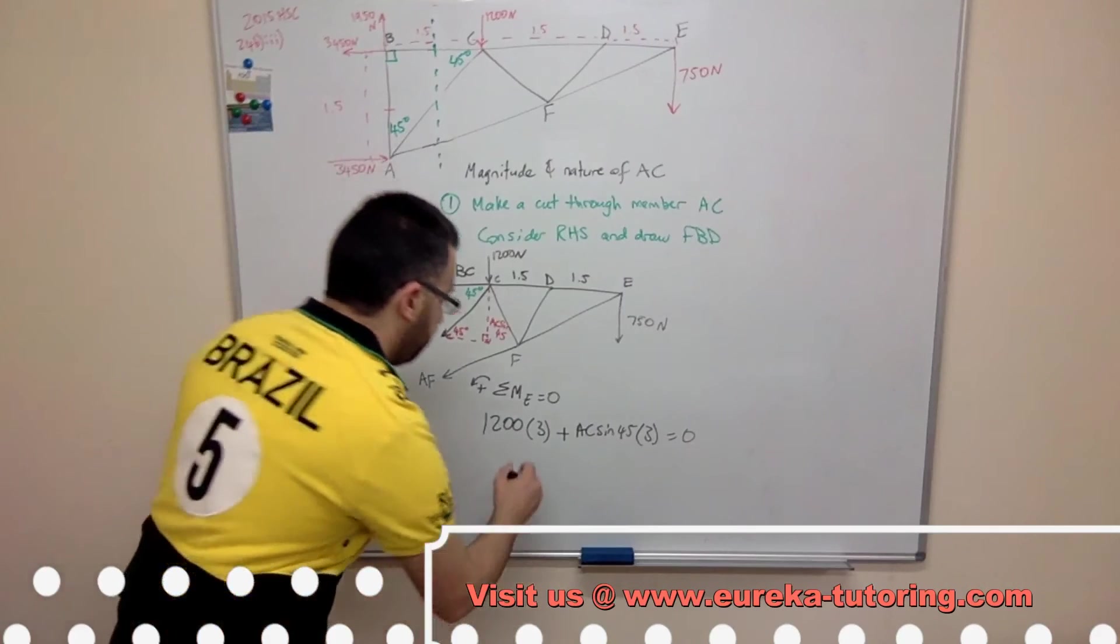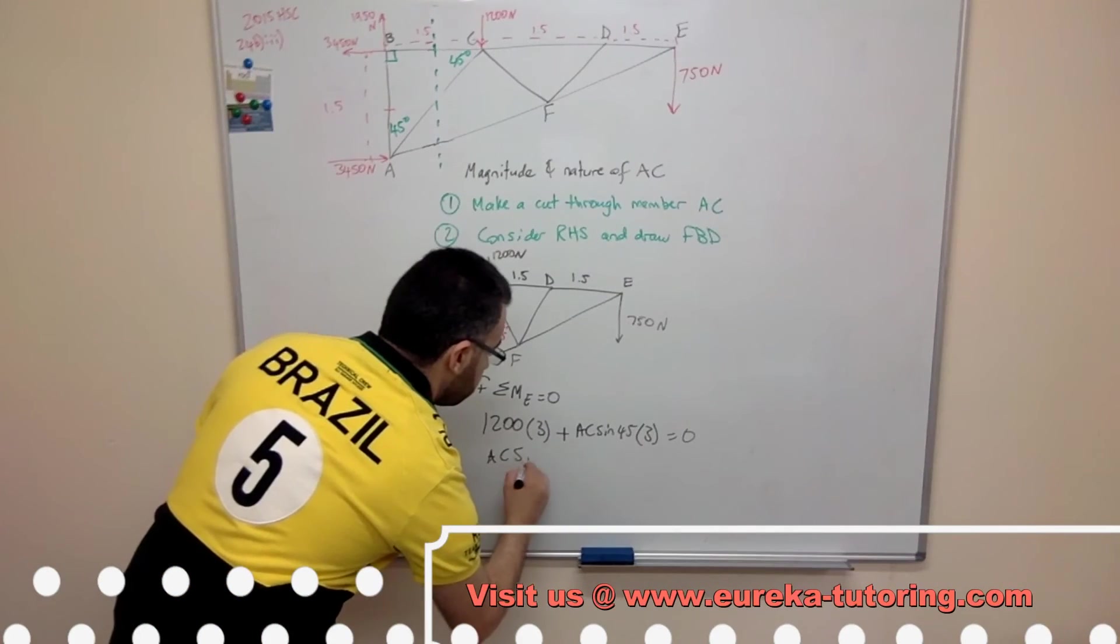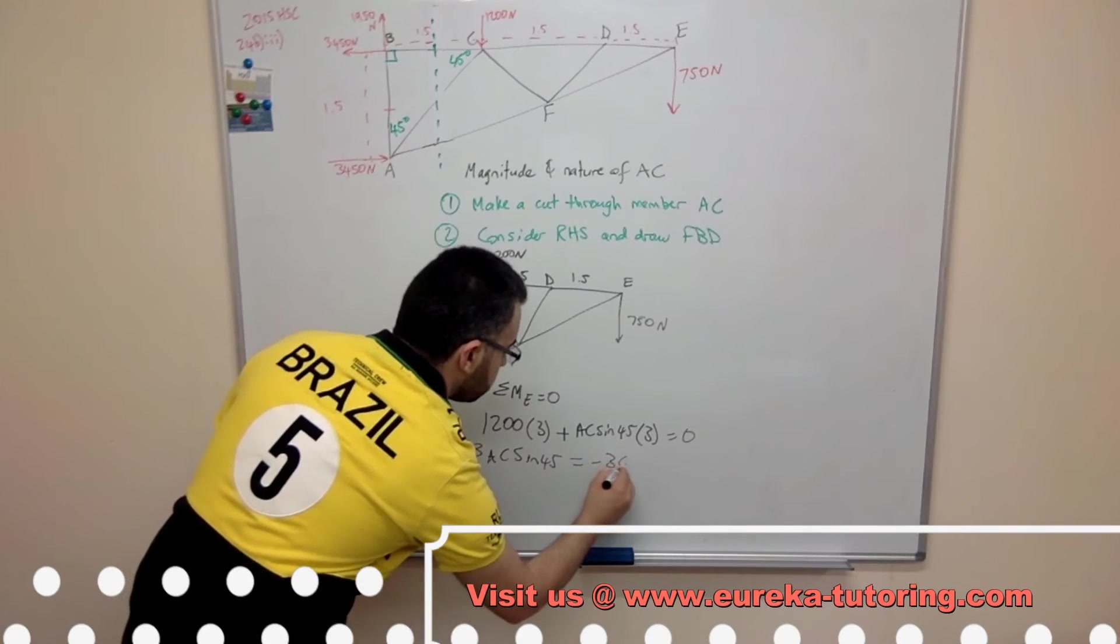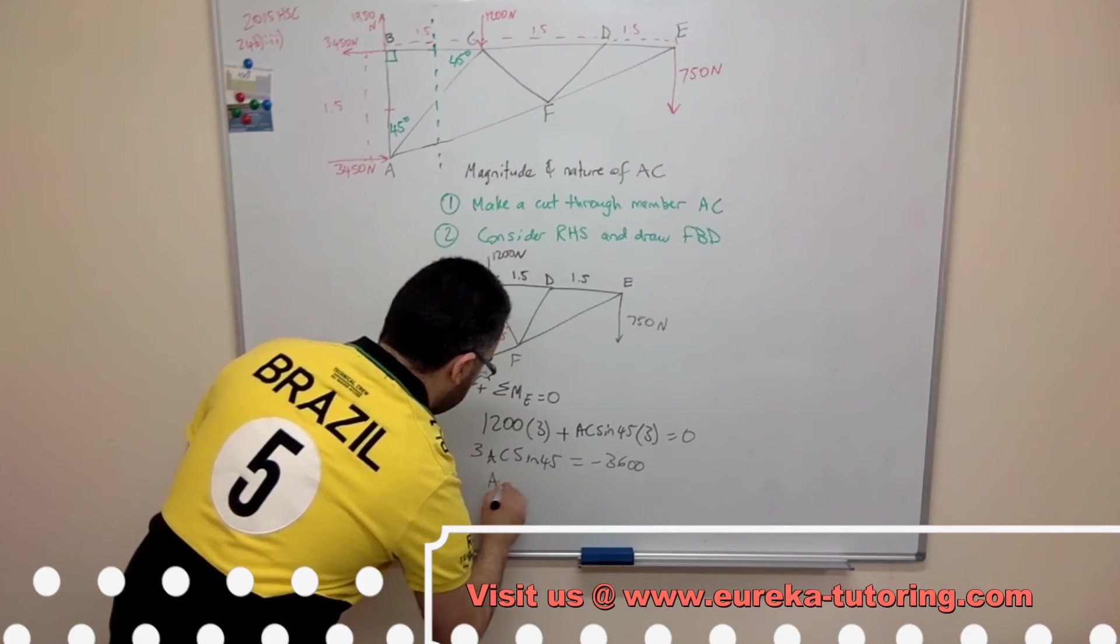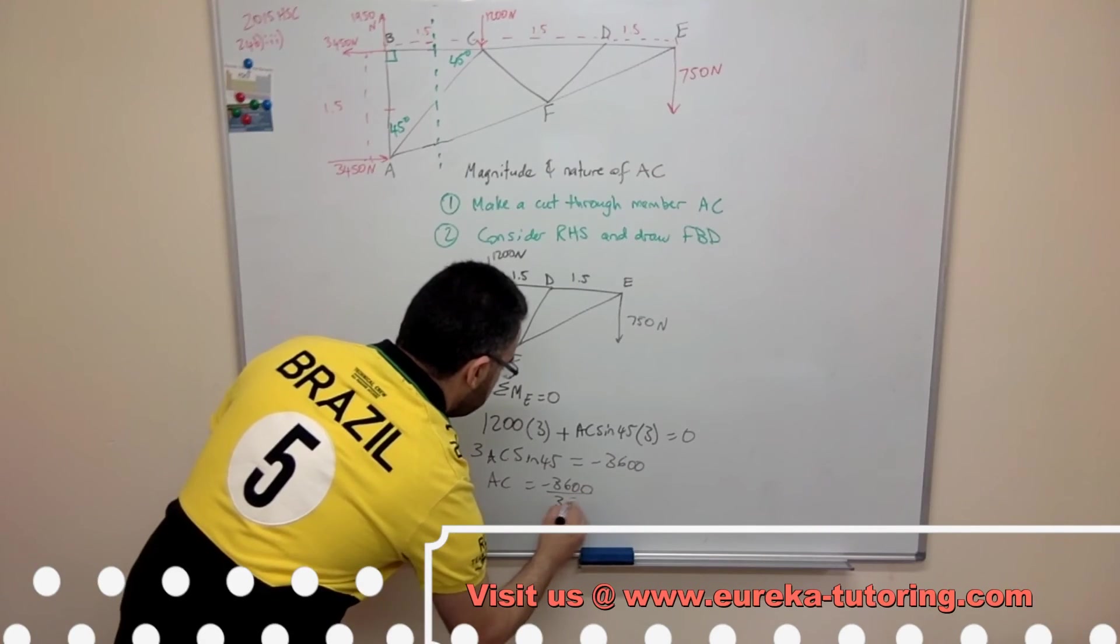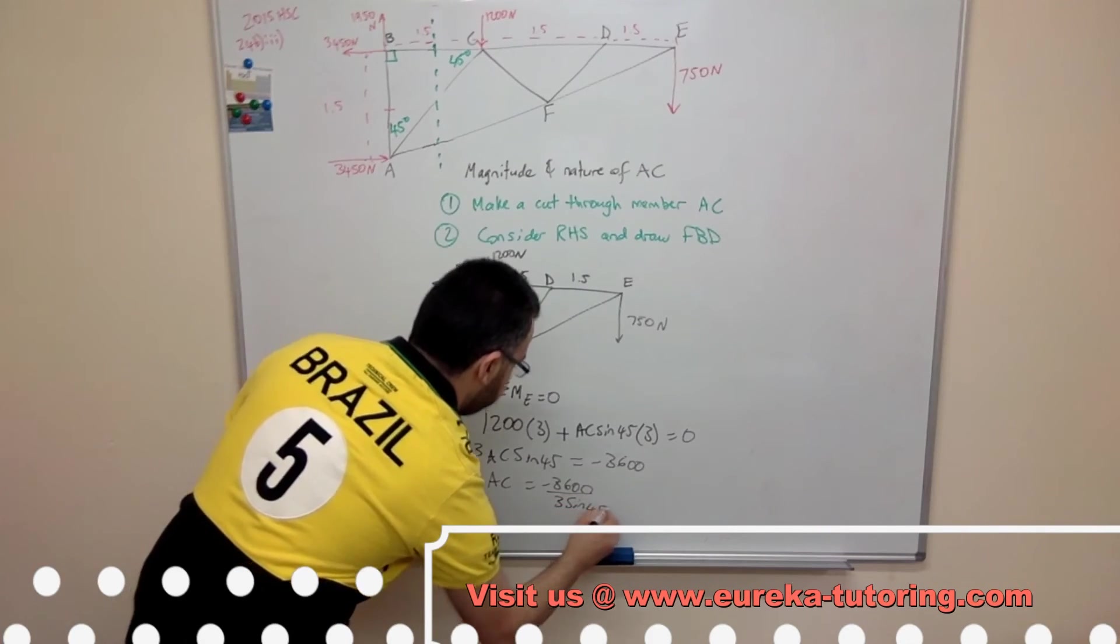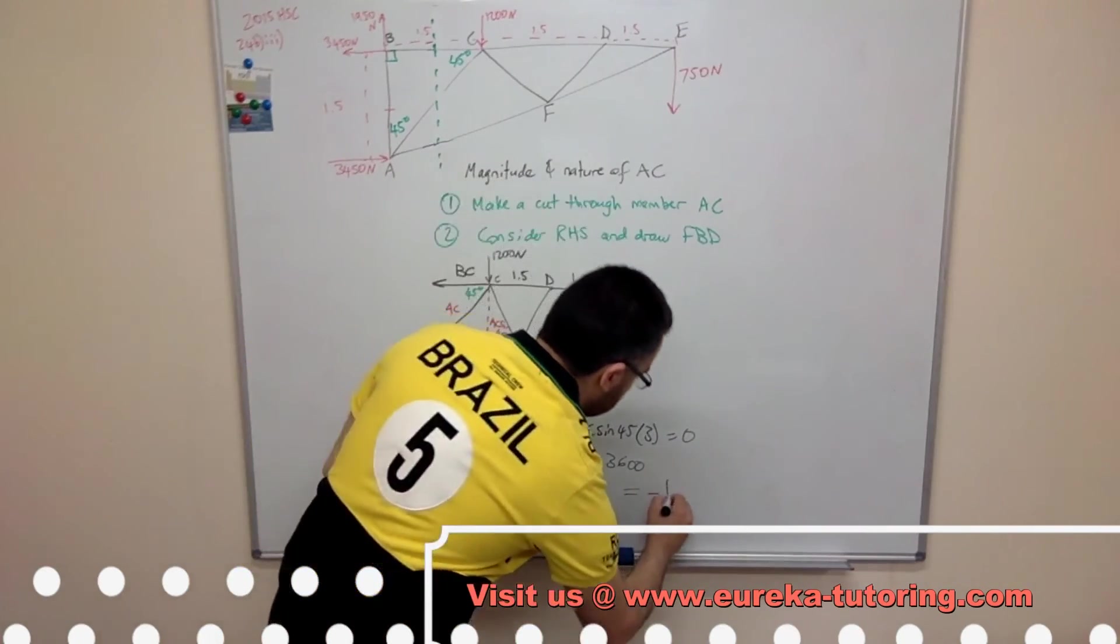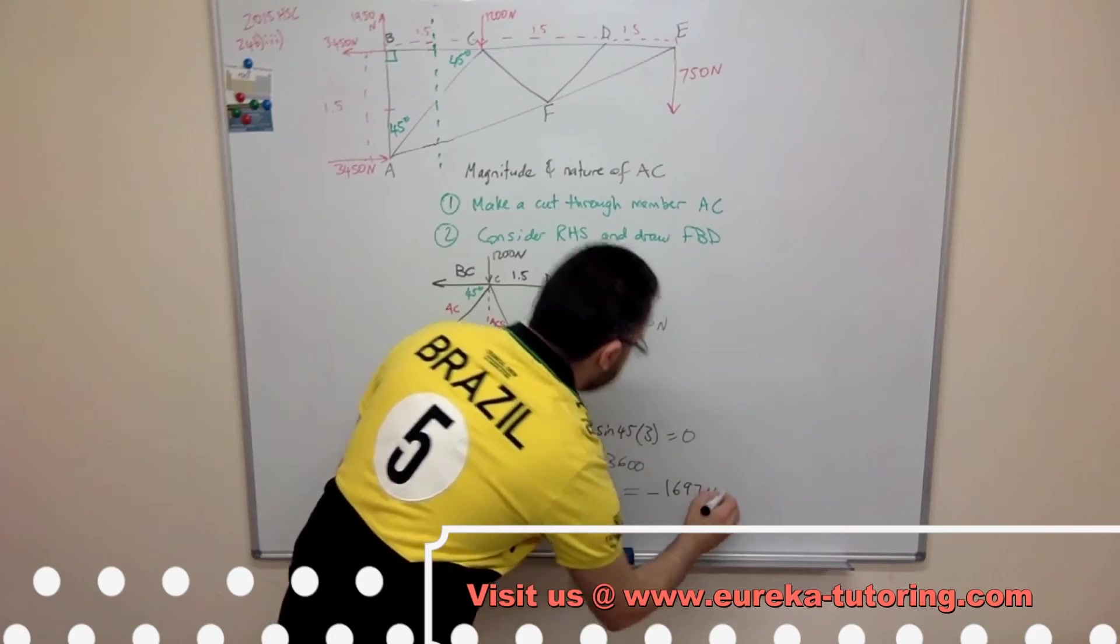Now, it's just a matter of simple algebra. AC sine 45 equals negative 3600. AC equals negative 1697 newtons.